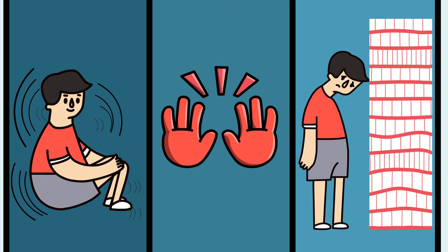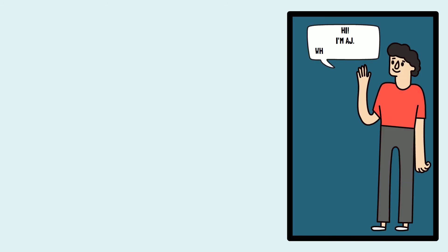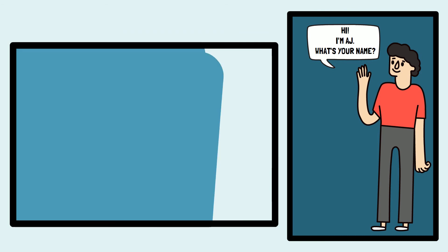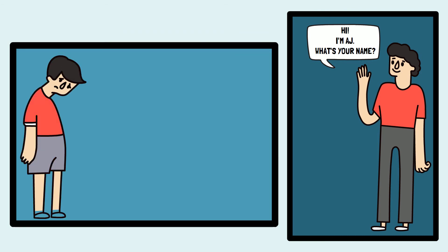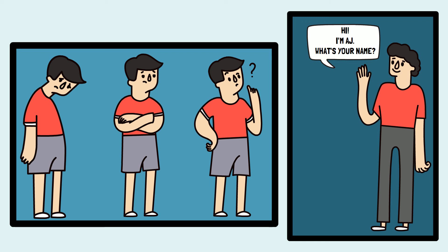These motor movements may be self-stimulatory such as hand flapping, or self-injurious such as banging their head against the wall. Due to the nature of these difficulties in terms of verbal as well as non-verbal communication, individuals with Autism Spectrum Disorder tend to experience difficulty in starting, maintaining and even understanding relationships.